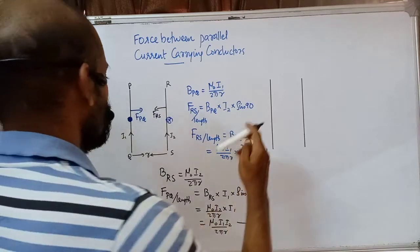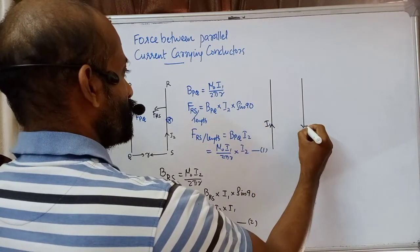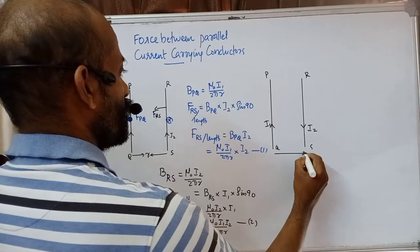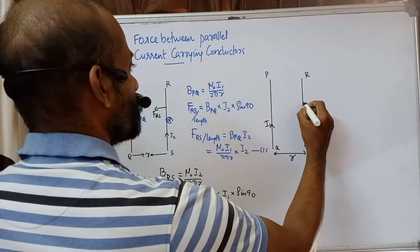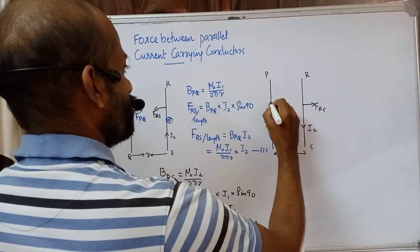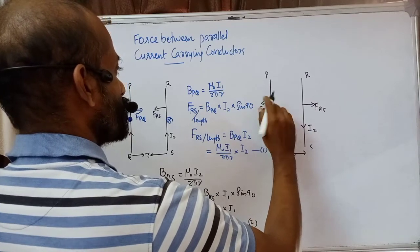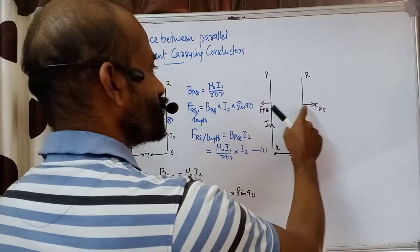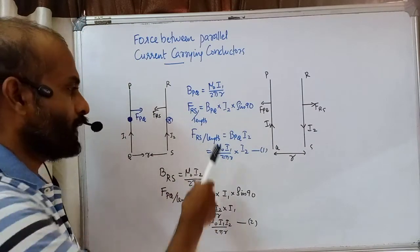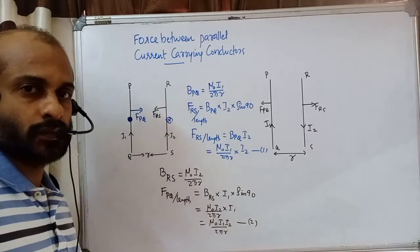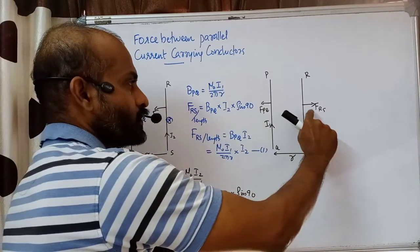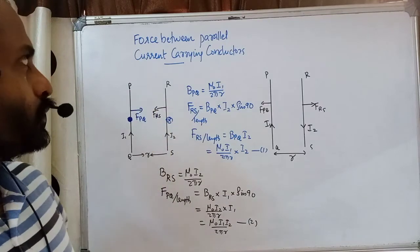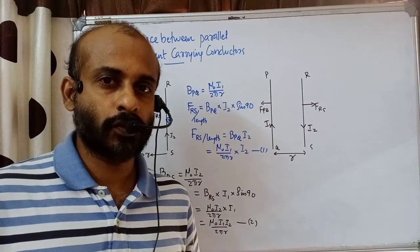If one of the currents is reversed in direction — say current in PQ is reversed — we can show that the force on RS reverses direction and F_PQ also reverses. The conductors now repel each other. We can verify the directions using the right-hand thumb rule. The magnitudes remain the same, but the directions are opposite, so the conductors move away from each other. This is the force between two parallel current-carrying conductors.